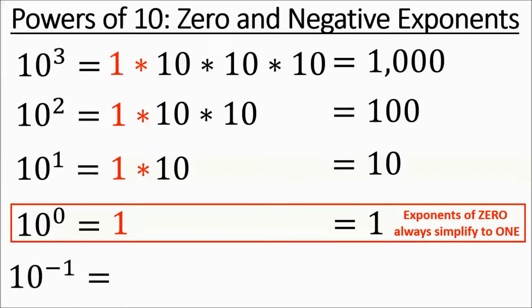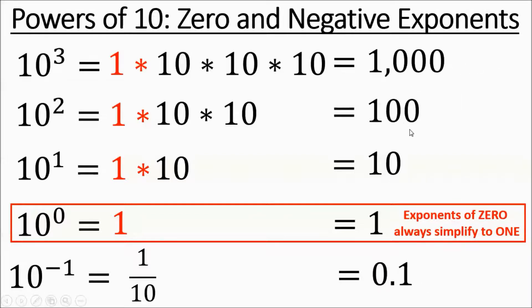Then we're going to get into negative exponents. A quick example: 10 to the negative 1 is basically 1 tenth, or 0.1 as a decimal. Notice the pattern — we had 3 zeros, then 2 zeros, then 1 zero, then no zeros, and then it started sliding. If you think of a decimal sliding, it keeps sliding left as we go smaller and smaller with the exponents.